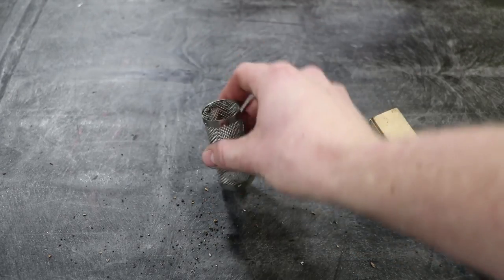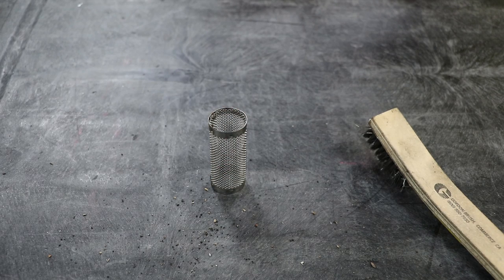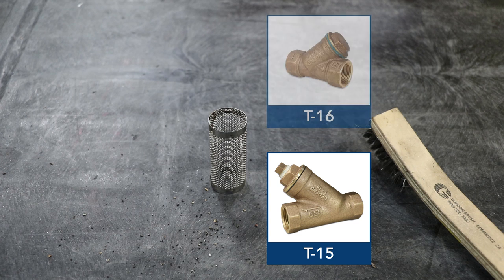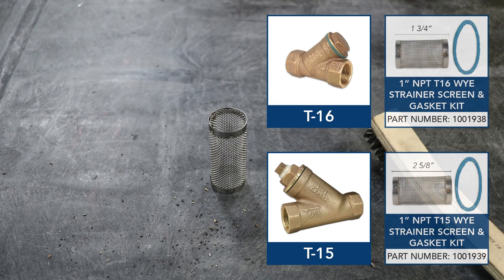One thing to note that there is two different strainer kits that we offer. The brass body of the strainer should be marked with either a T15 or T16. If you are unable to see the markings you can use a ruler to measure the Y-strainer screen.